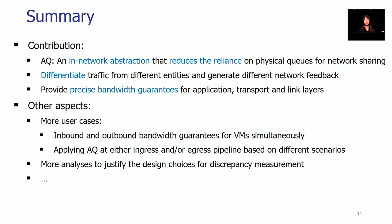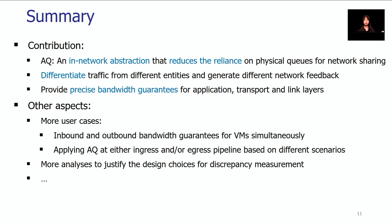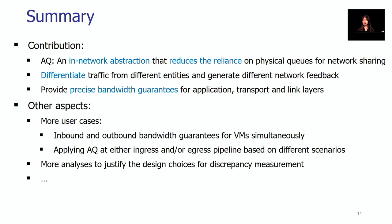In summary, AQ is an in-network abstraction for better network sharing that reduces the reliance on physical queues. It can differentiate traffic from different entities and control them separately based on different network feedback, providing precise guarantees for different traffic constituents across the application layer, transport layer, and link layer. AQ is not just about congestion control but also about performance isolation. There are more use cases including inbound and outbound guarantees for VMs, and AQ can be applied at either the ingress or egress pipeline on both sides. More analysis and evaluation results are available in the paper. Thank you.